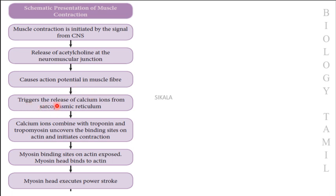The action potential triggers the release of calcium ions from the sarcoplasmic reticulum. Calcium ions stimulate and are released, then combine with troponin and tropomyosin, uncovering the binding sites on actin and initiating contraction.